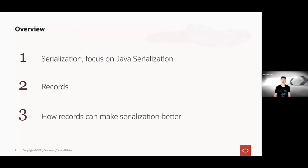To answer this question, we break it down into three parts. First, we look at the concept of serialization, and then we focus on Java's serialization framework. Then we move to records — why they were added to the JDK and what they bring to the platform. And then we bring those two bits together and explore the advantages that records have in the context of serialization.